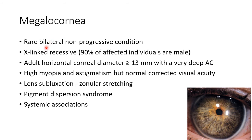Now let us discuss about megalocornea. It is a rare bilateral non-progressive condition, inherited as X-linked recessive, so 90% of affected individuals are males. It is defined as adult horizontal corneal diameter of greater than or equal to 13 mm with a very deep anterior chamber. Remember the normal adult horizontal corneal diameter is 12 mm. It is associated with high myopia and astigmatism but normal corrected visual acuity. This picture shows a case of megalocornea. It is associated with lens subluxation due to zonular stretching, pigment dispersion syndrome, and various other systemic associations.